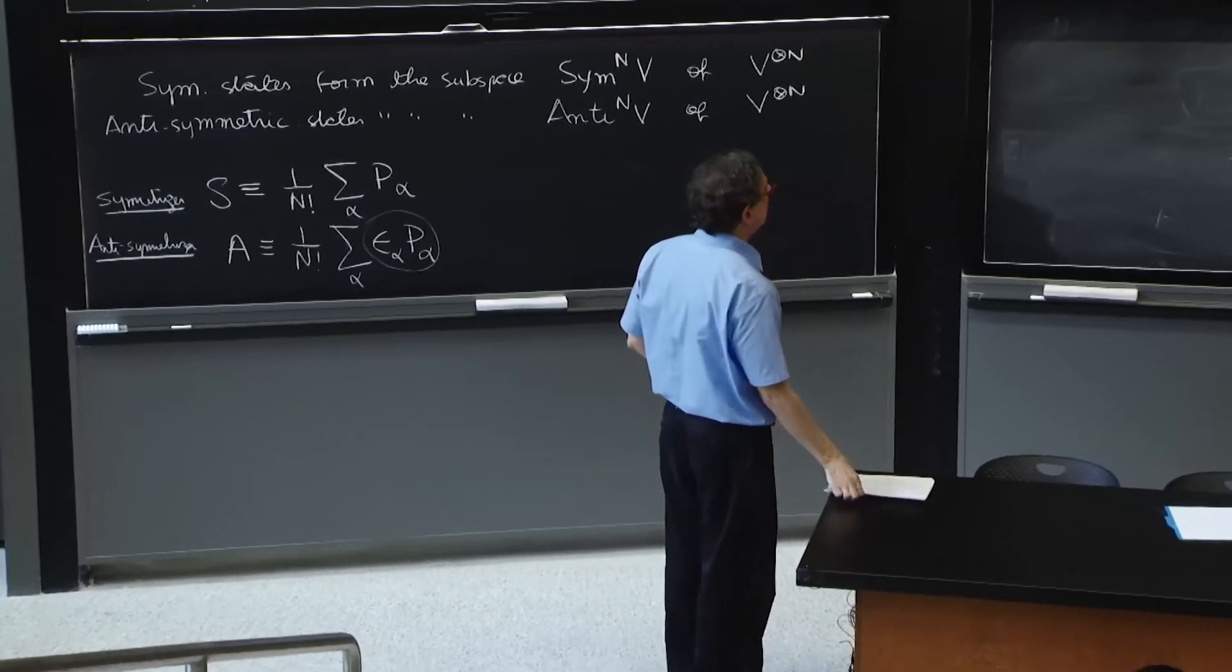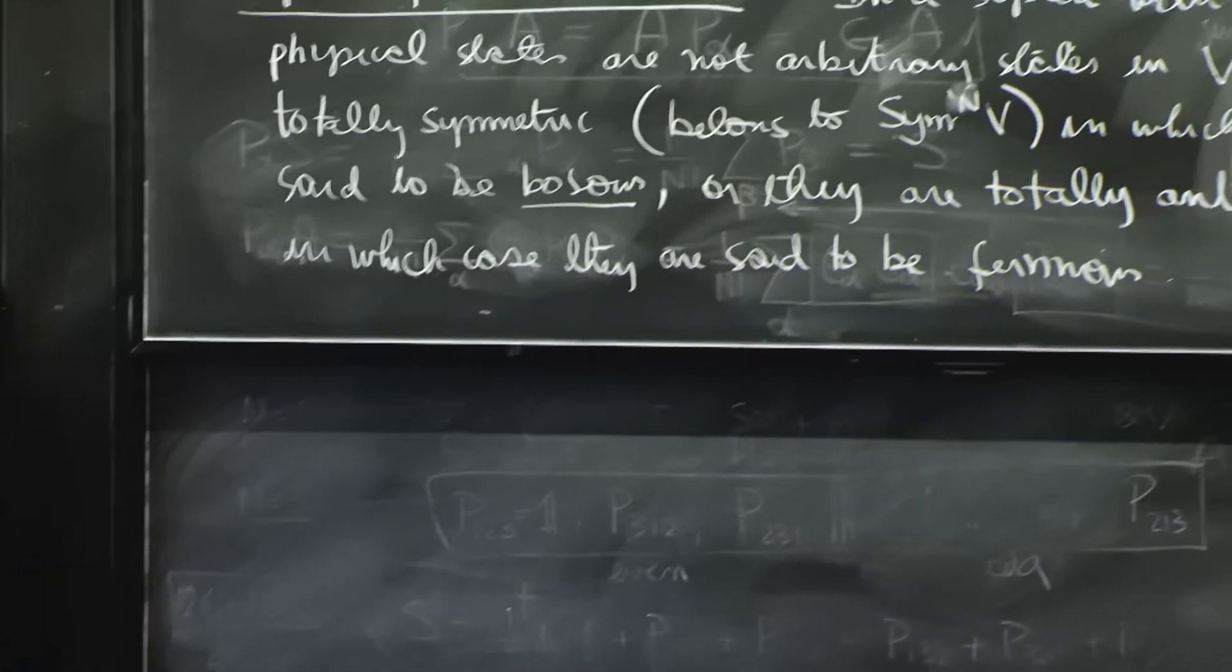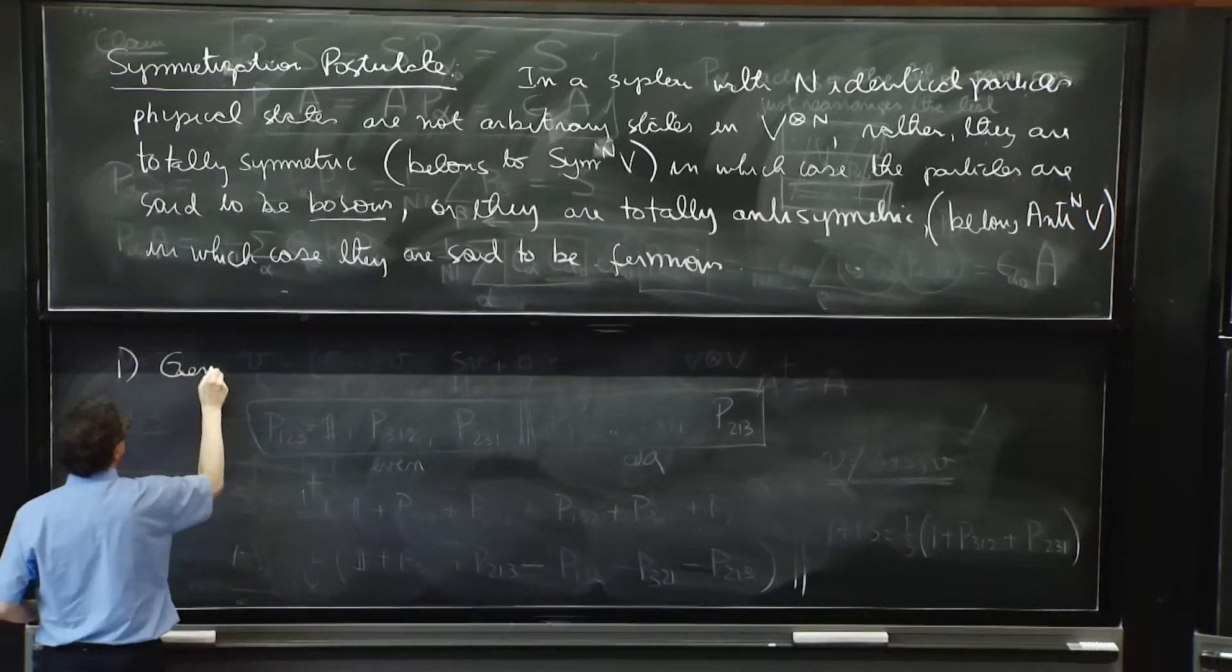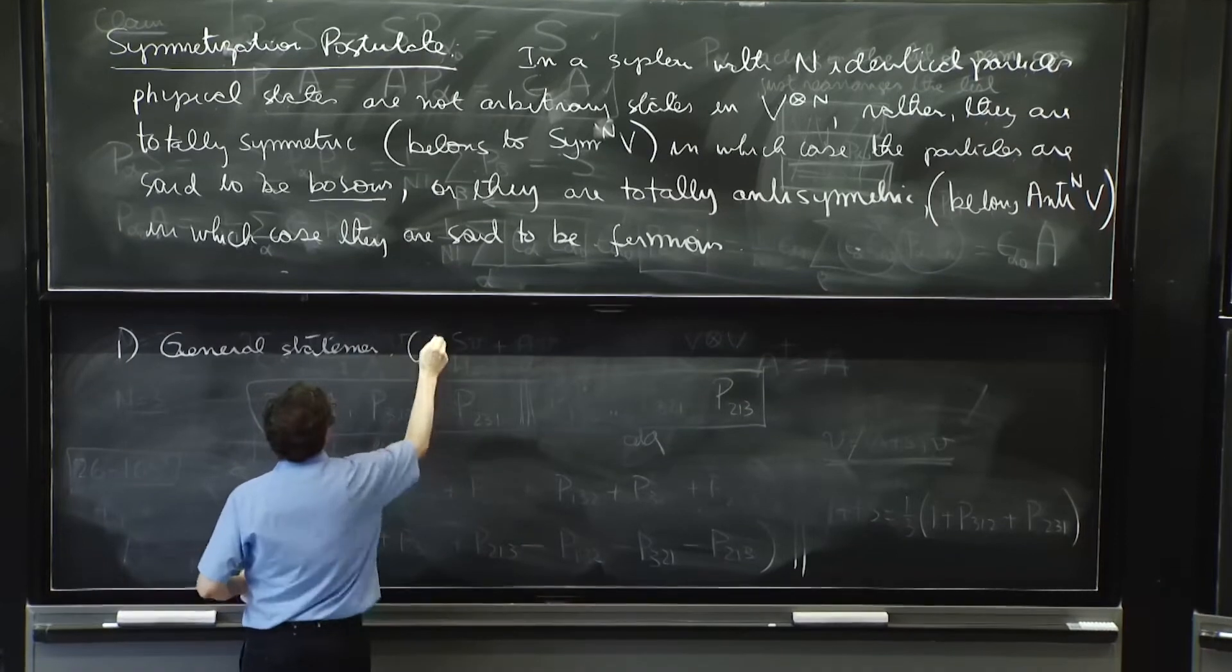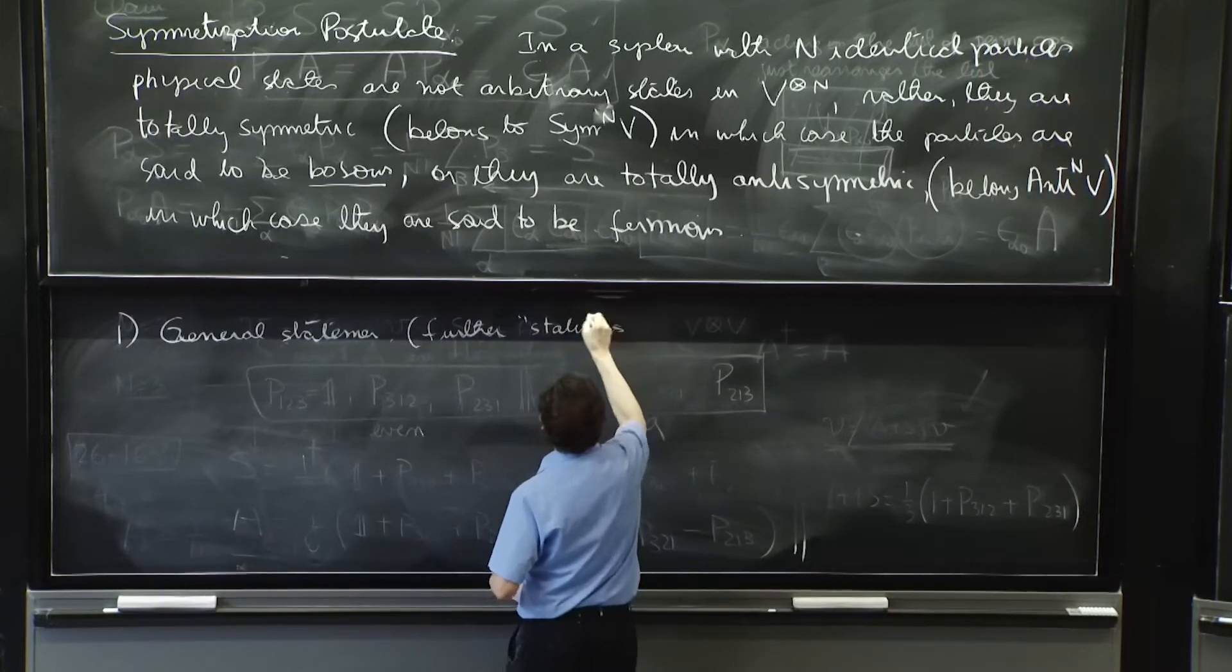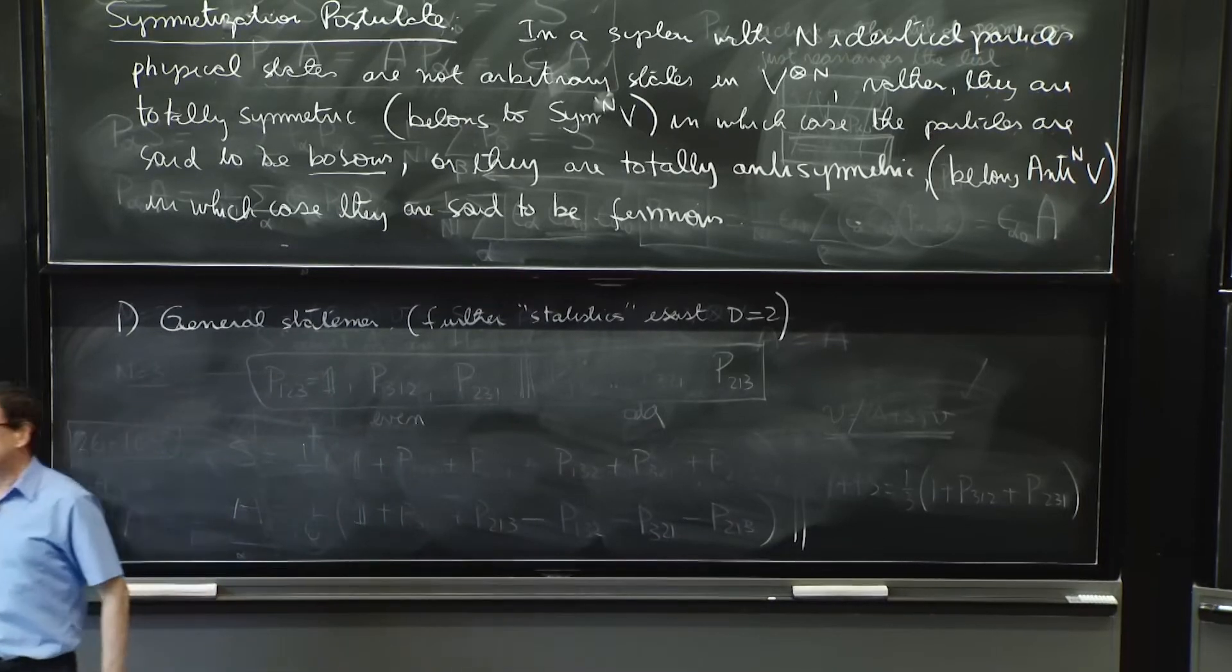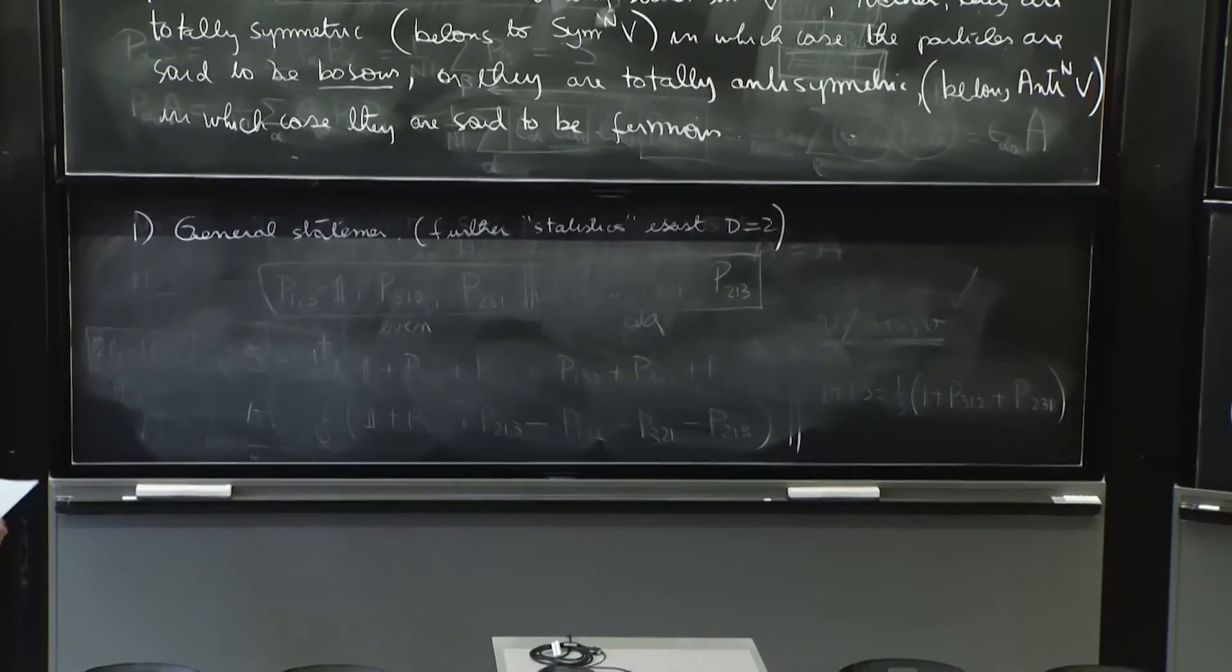So here it is. The statement we have made is a statement of fact in three dimensions. There's no particles that we like and we study. There are further possibilities in worlds of lower dimension—two, three dimensions, space-time or so, two-dimensional space—that allows for further kinds of statistics that are interesting. But this is the general statement. Further statistics, other types of states, exist in two dimensions, not in three where we live.